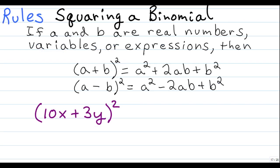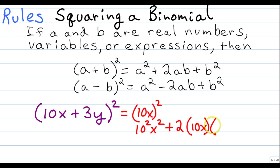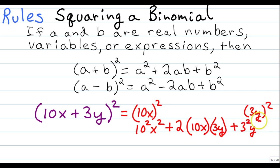So we're using the (a + b) squared rule. The a position is 10x, so we square that: 10 squared times x squared. Then we write plus 2 times what's in the a position — 10x — times what's in the b position — 3y. Plus we take what's in the b position, 3y, and square it: 3 squared times y squared.